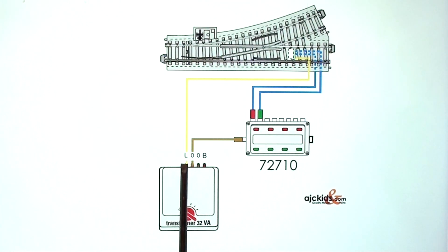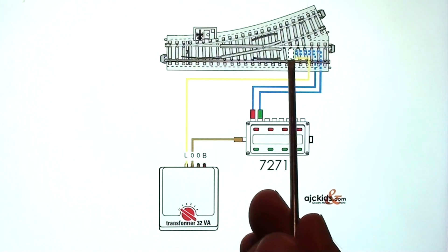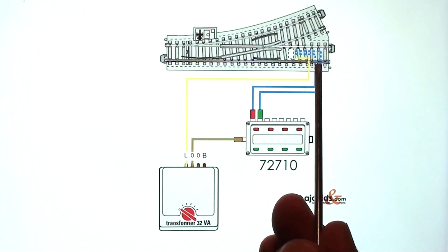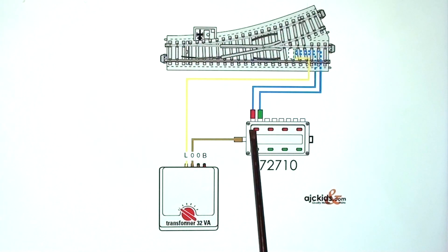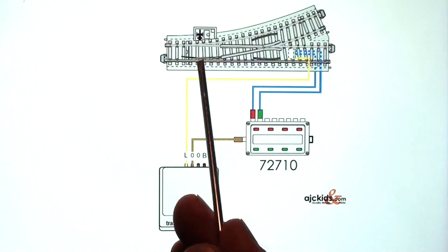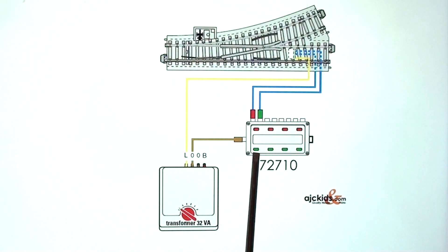What happens when you push one of the buttons is that the power will run through the magnets and come back through the blue. And in this case the red plug because the red button is what you pushed, and it will set the turnout to curved.